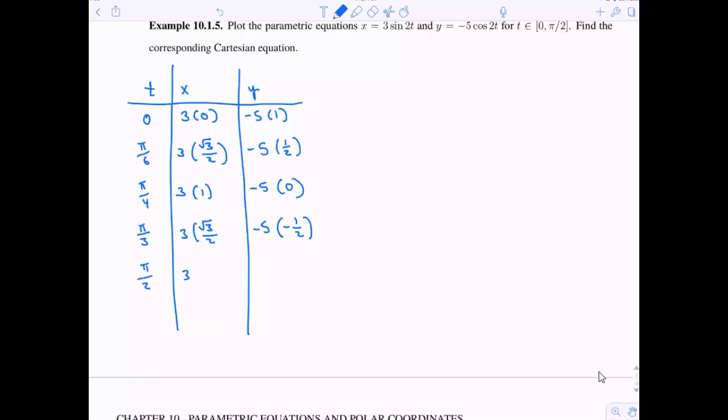Finally when I plug in pi over 2, this is sine of pi. Sine of pi is 0. And then negative 5 times cosine of pi, which is negative 1.